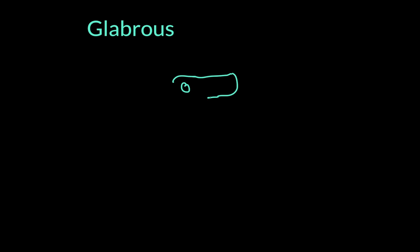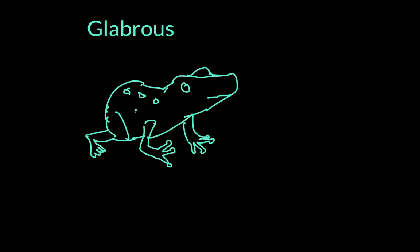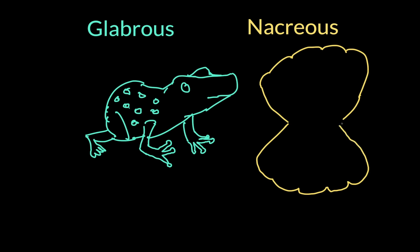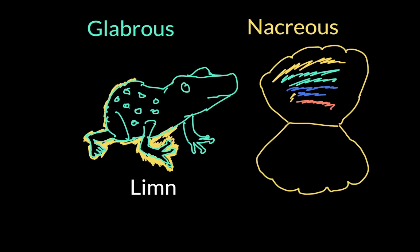Oh, and if you were curious, Glabrous means smooth and hairless, like a leaf or the skin of a frog. Nacreous means shiny and rainbow-colored, like the inside of an oyster shell. And to limn something means to draw the outline of, or to be highlighted in light.